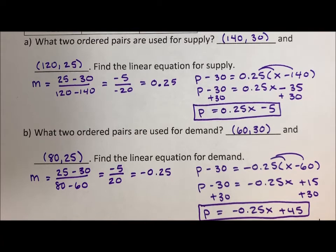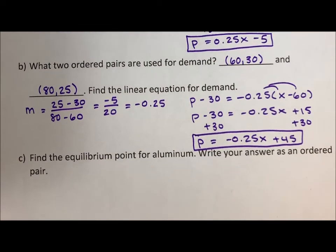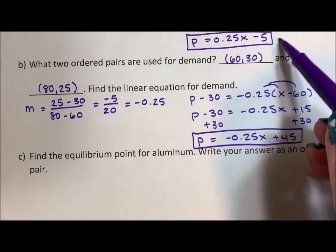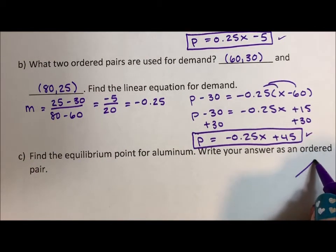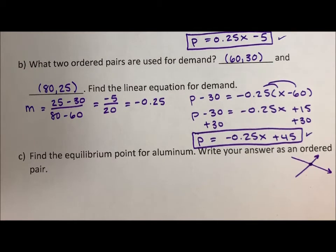So now I have a demand equation and a supply equation. So if I scooch this up, the next question says, find the equilibrium point. And the equilibrium point is the point at which these two equations intersect. So I have my supply equation and my demand equation and my equilibrium point is the point of intersection. And that is the point that will hopefully maximize my profit.